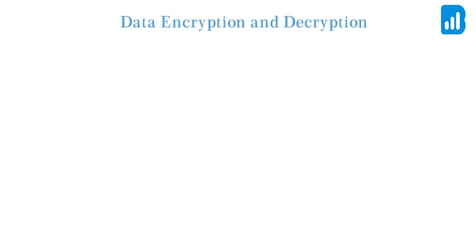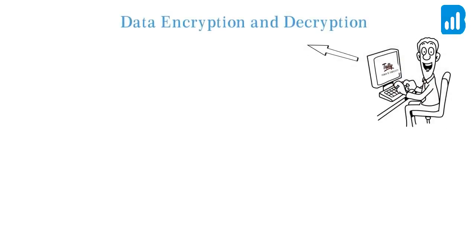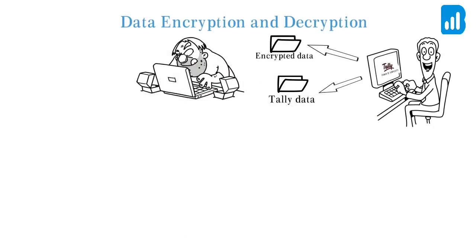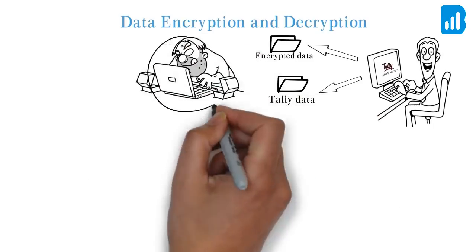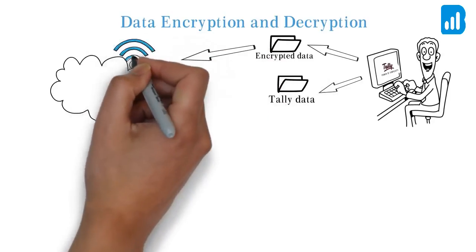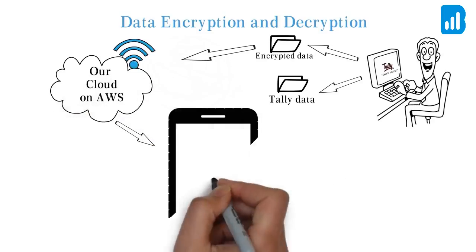Data Encryption and Decryption: As soon as we sync your data from Tele, we encrypt the data and store it in a separate folder, so that it can never affect your Tele data. Since the data is encrypted, no one can read or understand your data. The same encrypted data goes on cloud, which we are hosting on AWS, and then the same encrypted data gets stored on your mobile device.